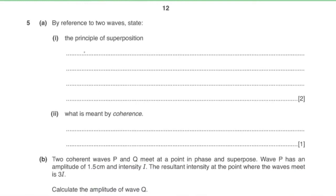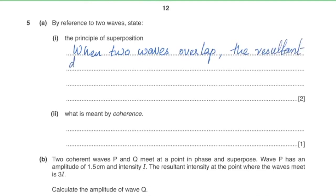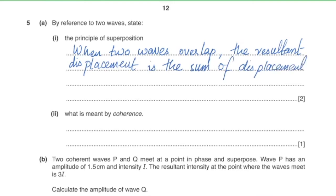Question five, part a: state the principle of superposition. When two waves overlap, the resultant displacement is the sum of the displacements of each individual wave. Coherent waves have a constant phase difference.